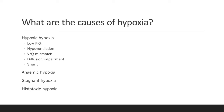Number two: anaemic hypoxia. This is where the partial pressure of oxygen in the alveolus is normal, but the oxygen content in the blood is low. This can occur in acute and chronic anaemias, and also when there is a pathology which affects haemoglobin's ability to bind with oxygen, as we see in carbon monoxide poisoning.